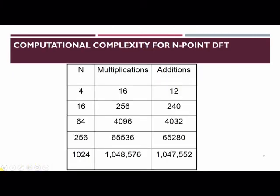So this table shows for different values of capital N using the direct DFT method, how many number of complex multiplications and complex additions will be required. So we have seen the case of N equals 4.